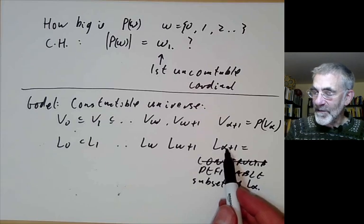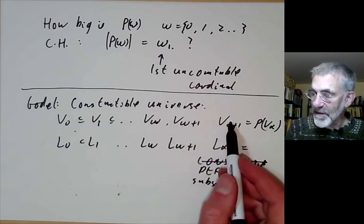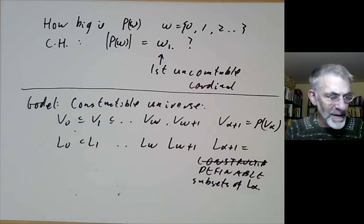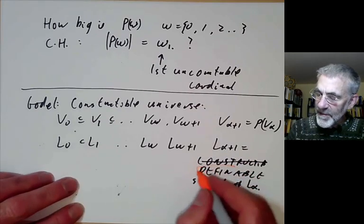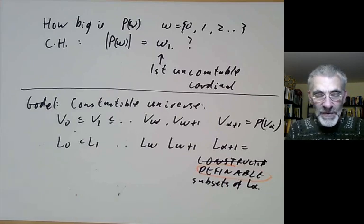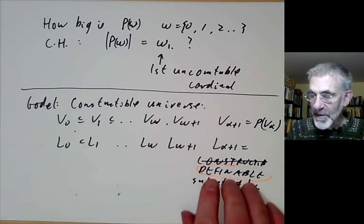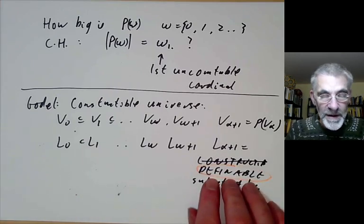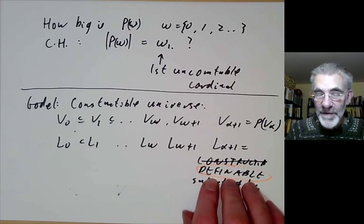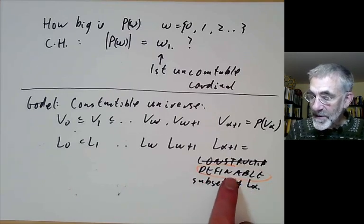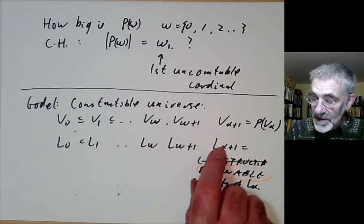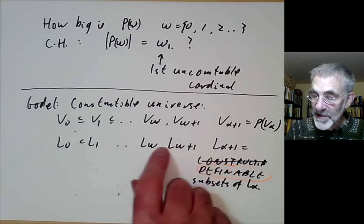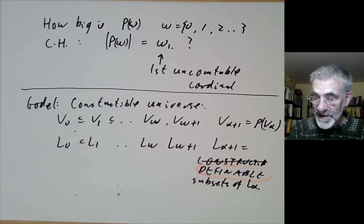So L of alpha will in general be smaller than V of alpha. And it's actually a little bit tricky to say what you mean by definable because you need to make this precise. So definable means definable by a statement of the language of set theory and it's allowed to have as parameters any constructible sets that you've already constructed at previous levels.